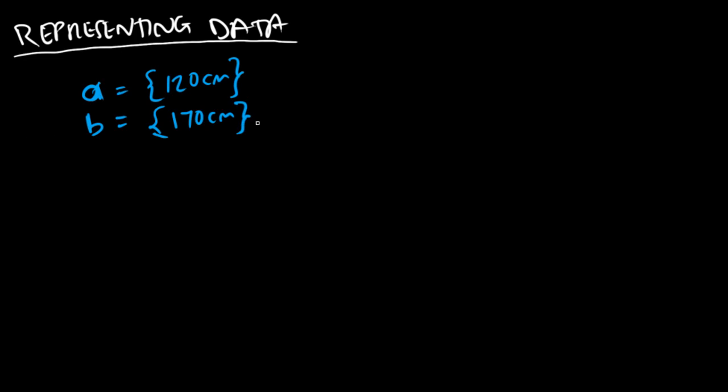The good thing about using vectors is that we can actually represent this visually. So we've got a single vector, one dimension, and let's say 0 centimeters, 100 and 200. So this data point lies about here approximately and B lies about here at 170.